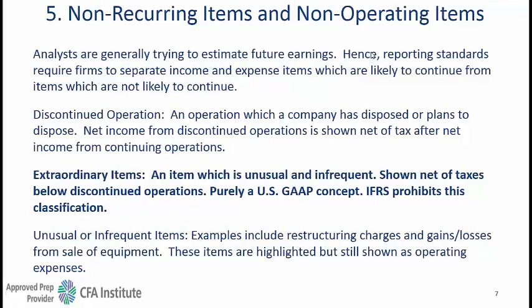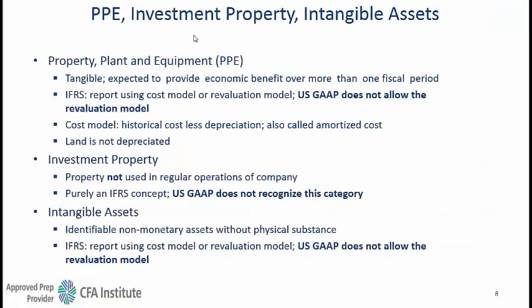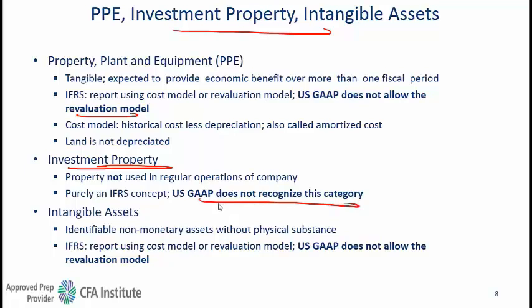When dealing with non-recurring items, the category of extraordinary items that can be shown as non-operating exists in US GAAP but does not exist in IFRS. For property, plant and equipment and long-term assets in general, IFRS has the concept of a revaluation model whereas US GAAP does not — US GAAP just sticks with the cost model using initial cost and then depreciation. There is some truth to US GAAP being rules-based because revaluation introduces subjectivity, which US GAAP generally does not like.